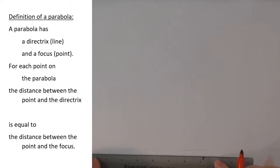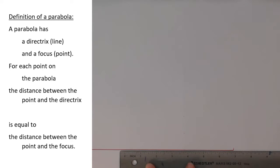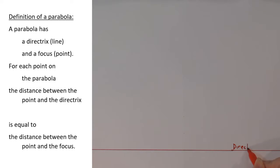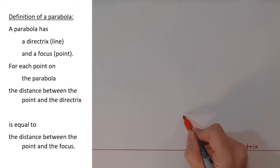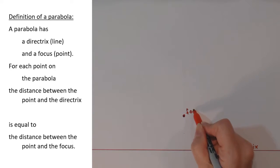To construct a parabola, we need a straight line, called a directrix, and a point not on the line, called a focus. The parabola consists of all the points that are the same distance from the directrix that they are from the focus.